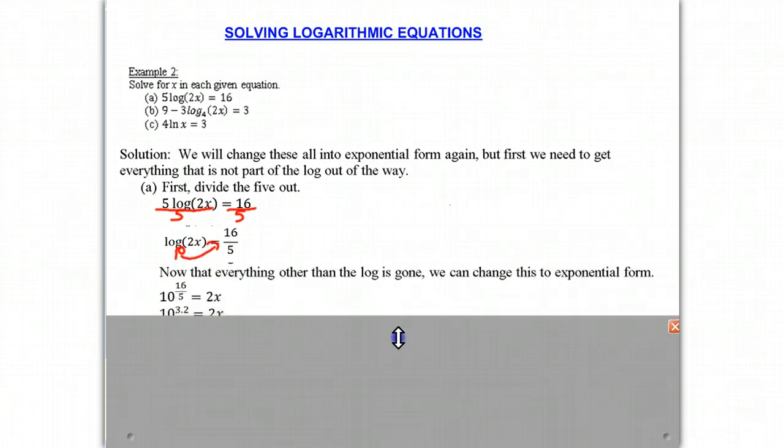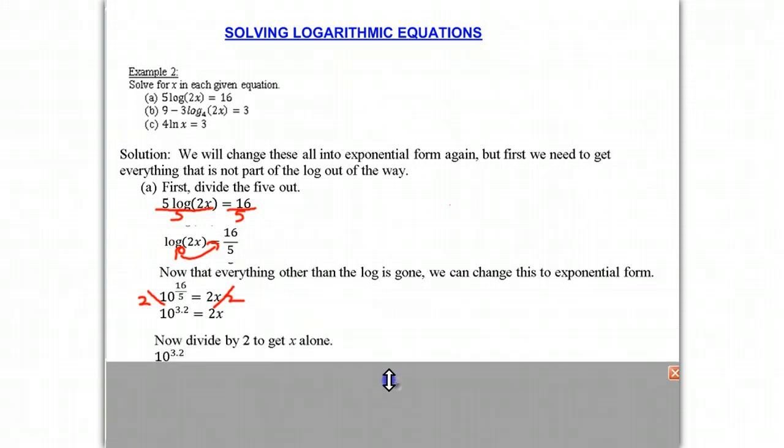So we just move down a little bit. And there we have it: 10 to the 16/5th power equal to 2x. And naturally, you should realize you need to divide both sides by 2. And then we put into our calculator. So 10 to the 16 fifths is the same as 10 to the 3.2 power. We divide by 2, and that gives us 10 to the 3.2 power divided by 2 is equal to x.